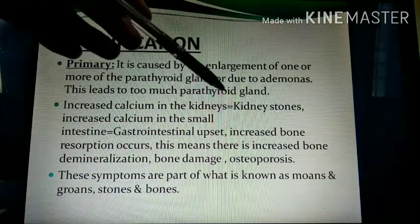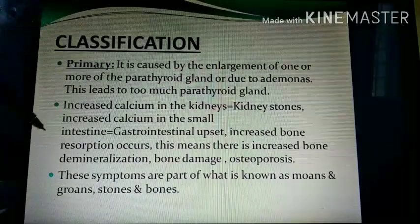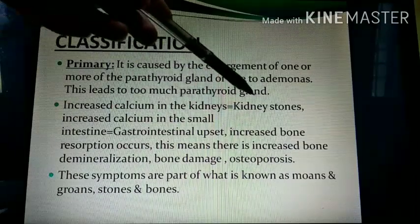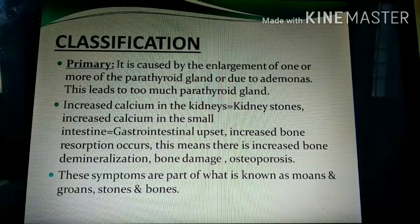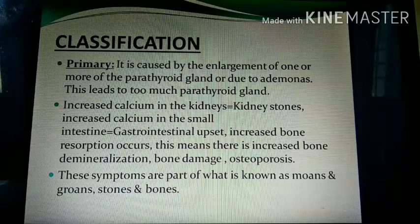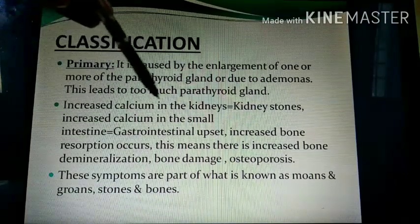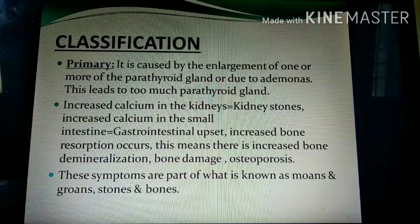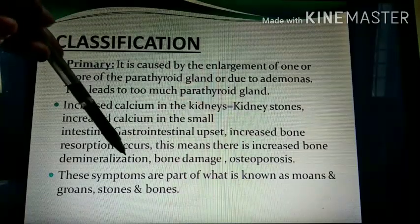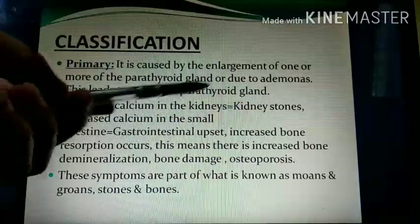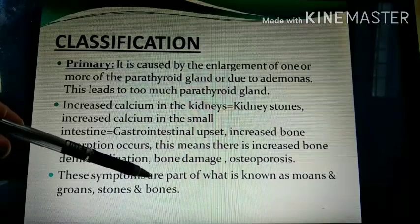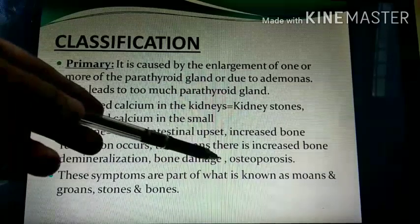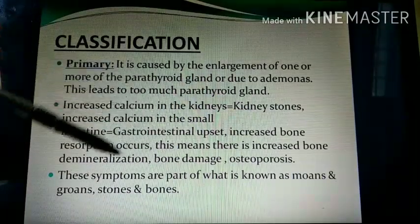Increased calcium in the kidney can cause kidney stones. Increased calcium in the small intestine can cause GI upset. Increased bone resorption occurs — osteoclast cells destroy bone, releasing calcium, making bones weak due to bone demineralization, leading to osteoporosis. These symptoms are remembered as 'stones' (kidney stones), 'groans' (GI symptoms), and 'bones' (bone damage and demineralization).